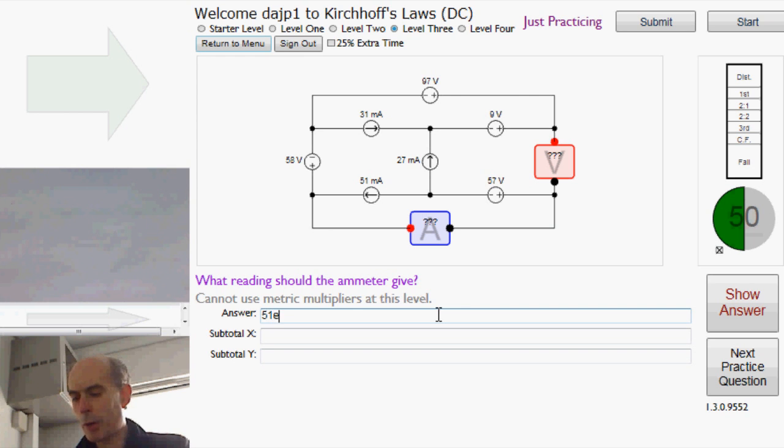And the total current flowing in this direction here must be 51 plus 27 milliamps. Which is 51 milli plus 27 milli. And that's the current that must be flowing through here, in this direction.